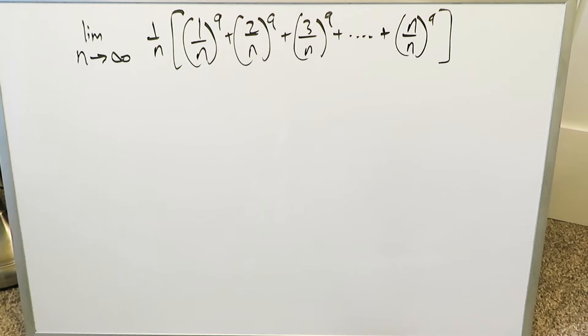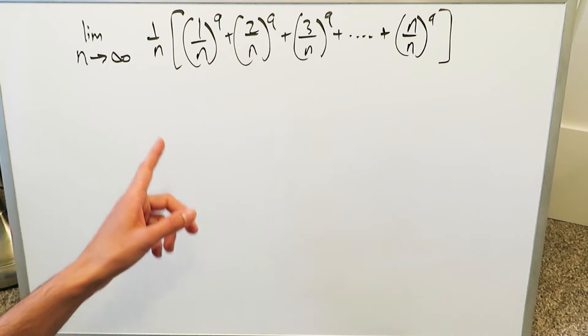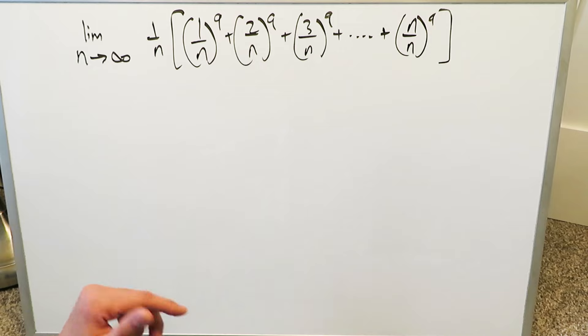For all of you in this video, we have limit as n approaches infinity, 1 over n, then this entire series inside the parentheses: 1 over n to the power of 9 plus 2 over n to the power of 9 plus 3 over n to the power of 9 going all the way up to n over n to the power of 9.